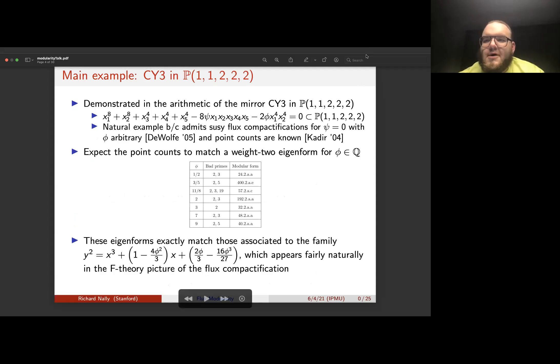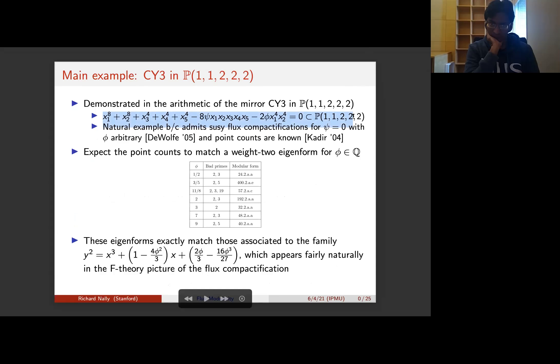And so throughout this talk, I'm going to be returning to one example, which is the Calabi-Yau threefold in P(1,1,2,2,2), which is defined as the vanishing of this projective polynomial. And this is a great example for us to think about, because number one...